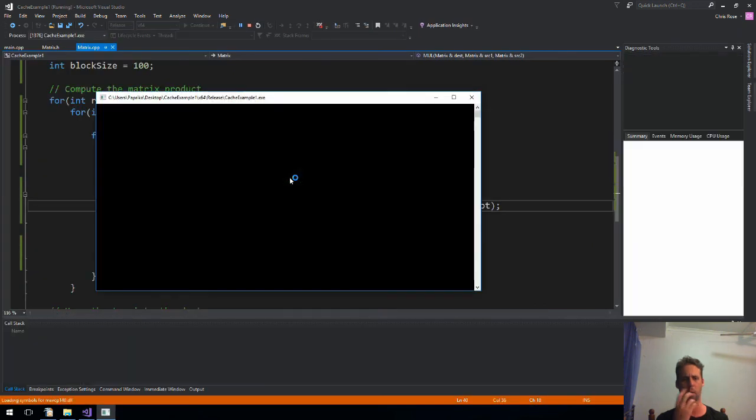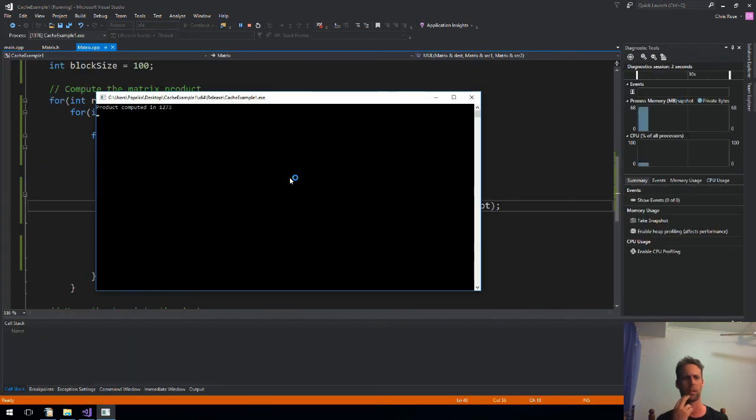This has to now change to block row. And this one's a block column. And likewise, when we're setting the values now, we've got to use block row and block column. But that should just about be it. So we're at two seconds before. Let's see what we're doing now.